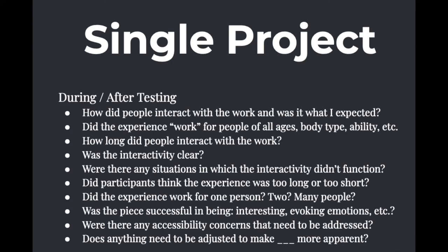The specific questions I ask during testing might vary, using methods like questionnaires, in-person interviews, or voting for option A or B. Here's an overview of what I tend to look out for: How did people interact with the work and was it what I expected? How did the experience work for people of all ages, body types, and abilities? How long did people interact? Was the interactivity clear? Were there any situations where it didn't function? Did participants think it was too long or too short? Did it work for one person, two, or many? Was it successful in being interesting and evoking emotions? Were there accessibility concerns? Does anything need to be adjusted to be more apparent?